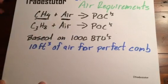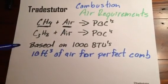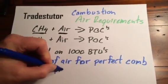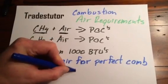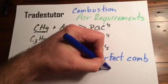So, for every 1000 BTUs, doesn't matter what type of gas, you need 10 cubic feet of air for perfect combustion. Of that, one third is what we call primary and two thirds is secondary.